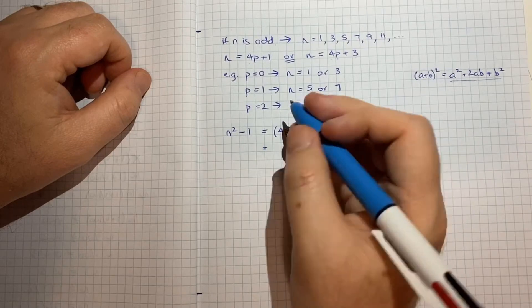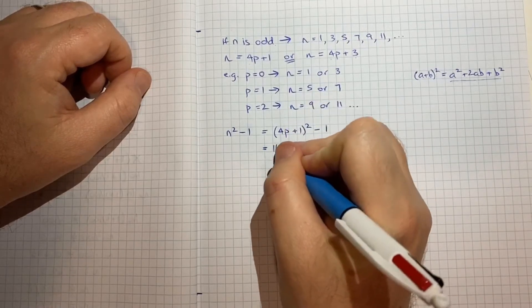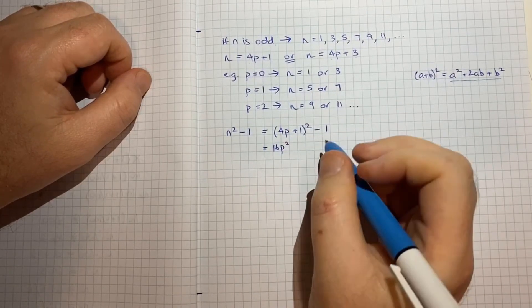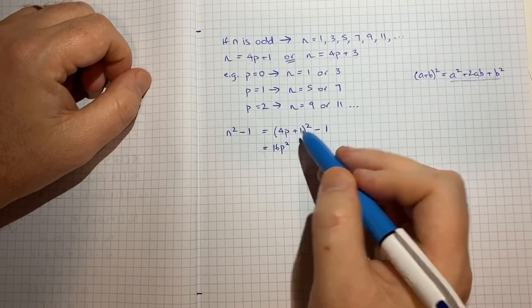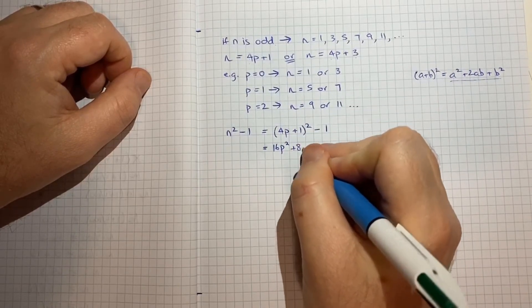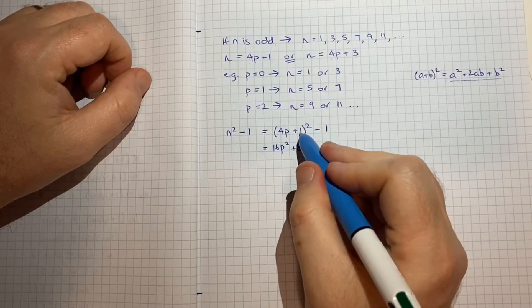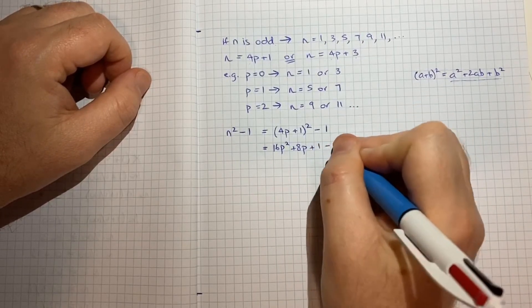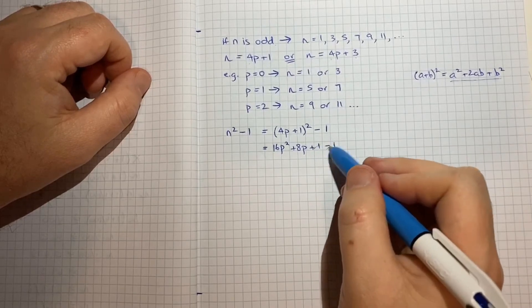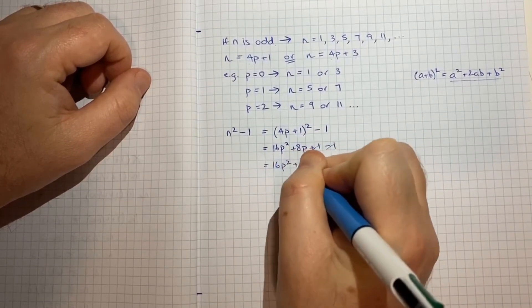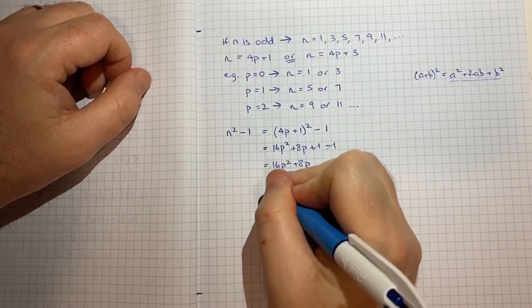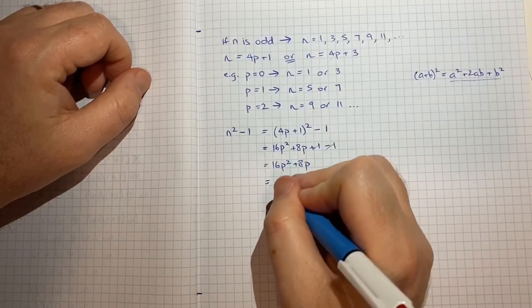So let's just do that so we'll get 4p squared which is 16p squared plus 2ab so 2 times 4p times 1 which is plus 8p plus b squared so plus 1 squared which is 1 minus 1. Those two 1's cancel.